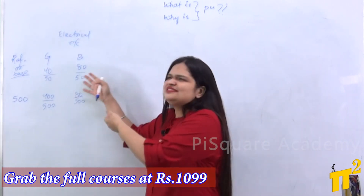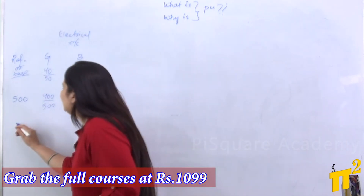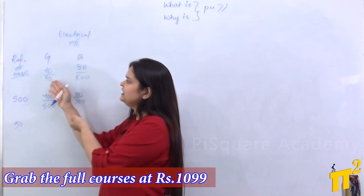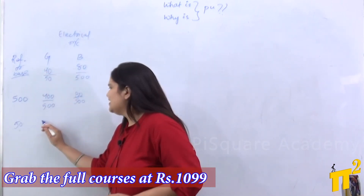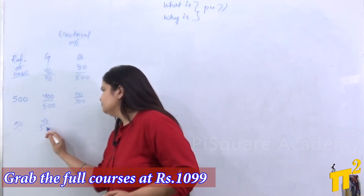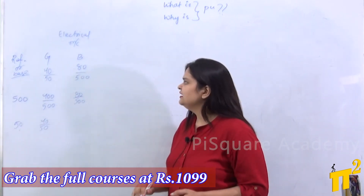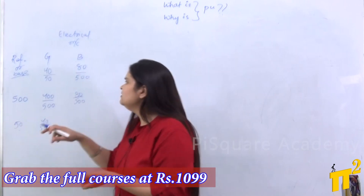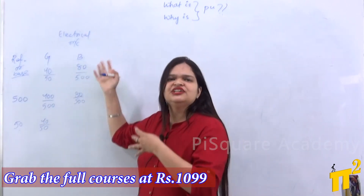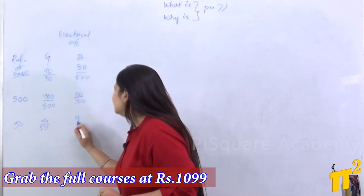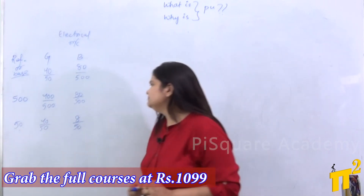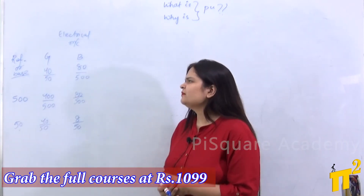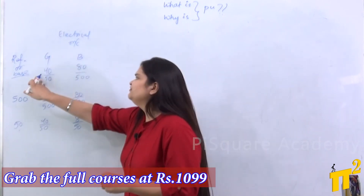Someone might say — why 500, why not 50? Okay, fine, I can take 50 as the base too. The girl's score is already at a reference of 50, so I can write it as 40 by 50. The boy's score is at a denominator of 500, so I need to divide both numerator and denominator by 10, making it 8 by 50. So now again I can see that the girl is the better performer.